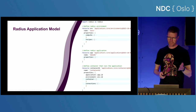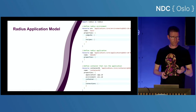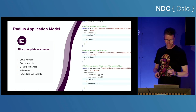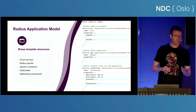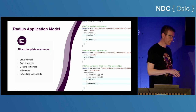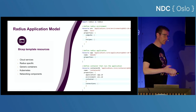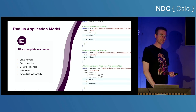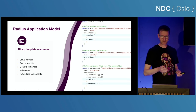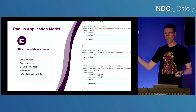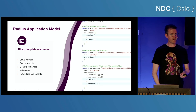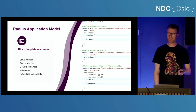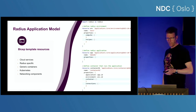You can define your application using Bicep. The cool thing is it's not just Radius resources you define — you can also define cloud resources. If you want AWS resources, you use Bicep to define them and Radius will make sure they are converted into AWS resources.